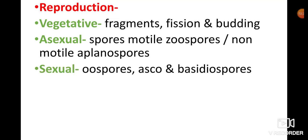Sexual reproduction occurs with the help of oospores, ascospores, and basidiospores. The names are based on their respective classes. These are the sexual forms of spores in fungi.